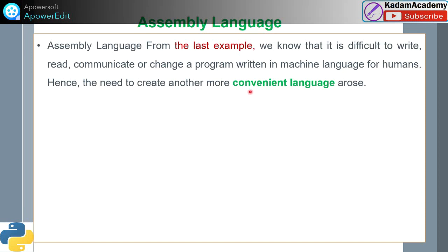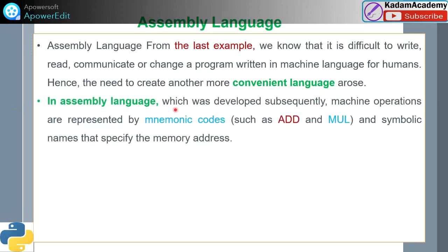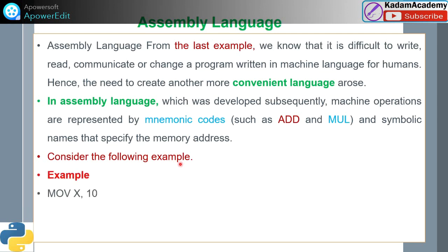The need arose to create a more convenient language — assembly language, which was developed subsequently. Machine operations are represented by mnemonic codes which are easy to remember, and symbolic names specify memory addresses. For example: MOV X, 10 / MOV Y, 20 / ADD X.